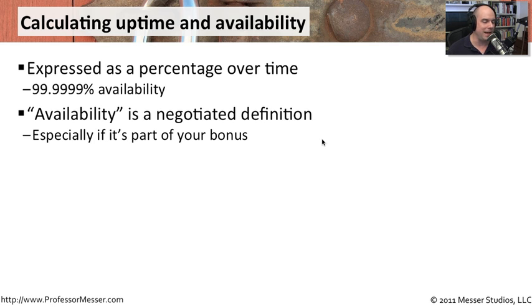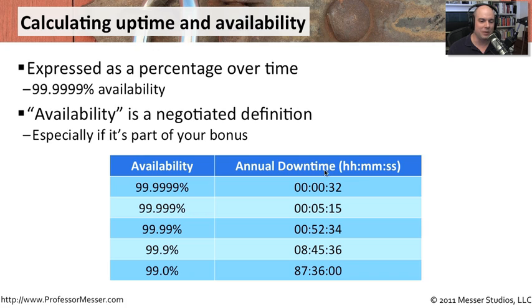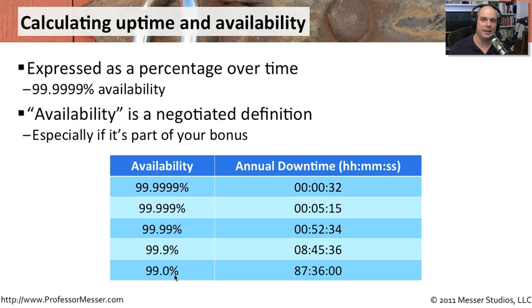If we look at percentages and how much annual downtime we're talking about: at 99.9999% availability, you have only 32 seconds of downtime per year. That doesn't give you much time — if there's an outage, it's probably going to be more than 32 seconds long. Five nines means you can have as much as five minutes and 15 seconds of downtime during the year. And at 99.0% availability, your systems are still not available for 87 hours and 36 minutes during a 12-month period.